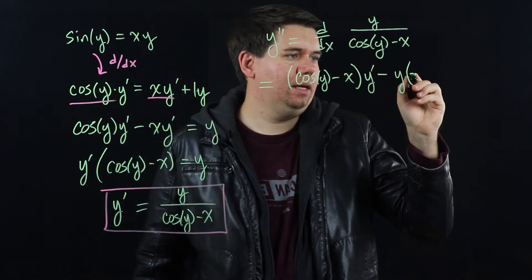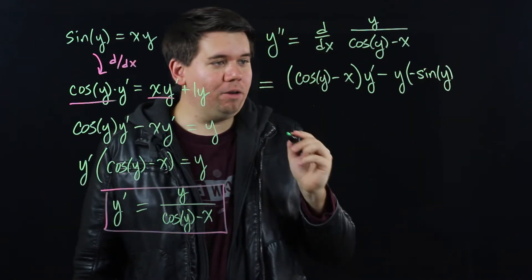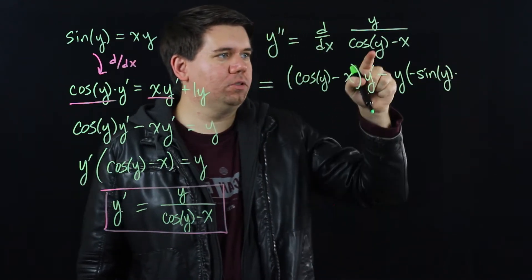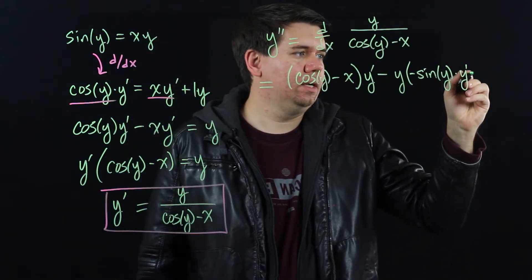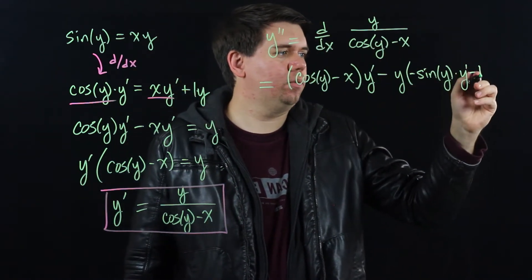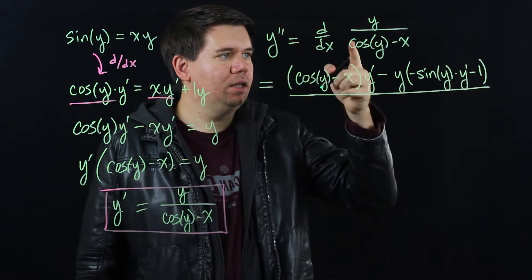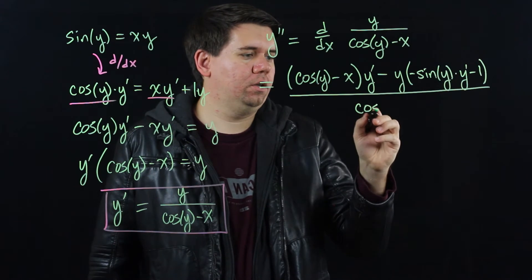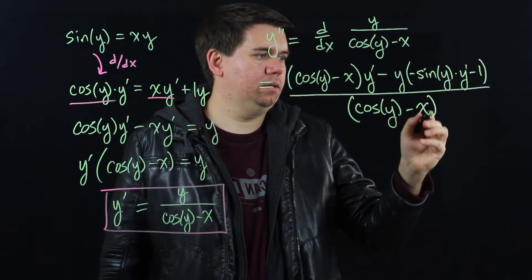The derivative of cosine is minus sine, so it's minus sine of y. But by the chain rule we need to multiply that by the derivative of the inside, the derivative of y which is y prime, minus the derivative of x which is 1. Then all over, we're doing quotient rule, the bottom squared. Cosine of y minus x squared.